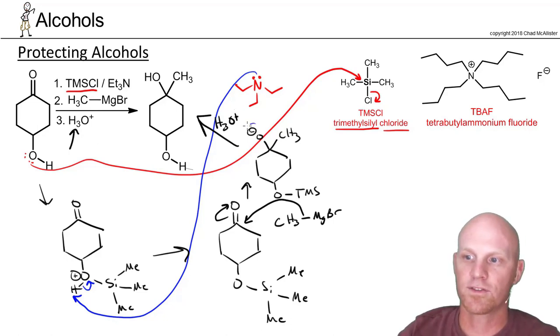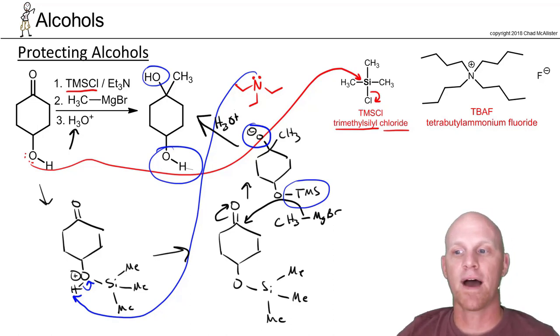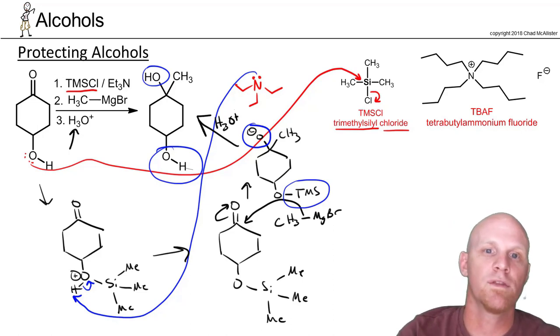That H3O plus is going to accomplish two things: one, it's going to protonate this oxygen, turning it into an OH, but also it's going to deprotect, turning that back into an alcohol as well. And so what's nice about these protecting groups is you can put them on, and when you're done with the reaction you want to do, then you can take them back off and deprotect.